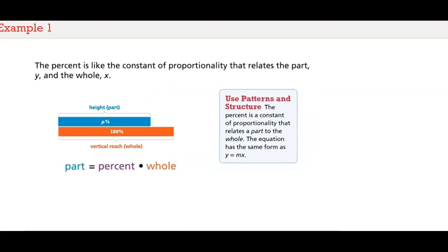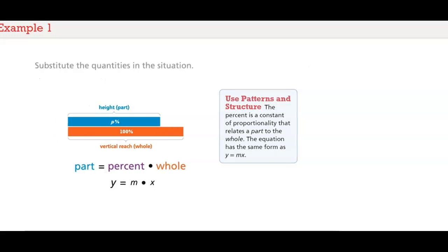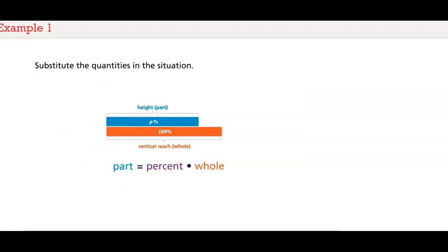How is this equation similar to a proportion? The percent is a constant of proportionality that relates a part to the whole. The equation has the same form as the proportion y equals m times x — the part is like y, the whole is like x, and the percent is like m, the constant of proportionality that relates the two quantities.